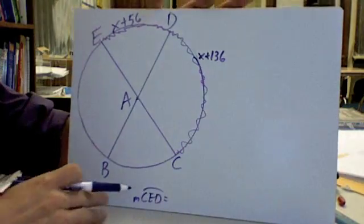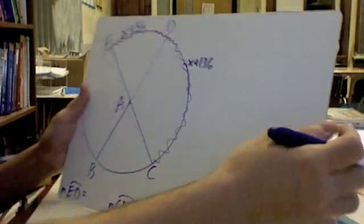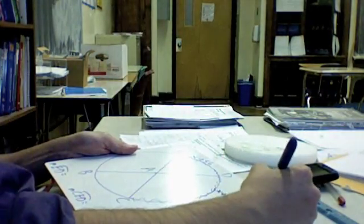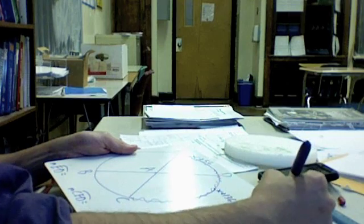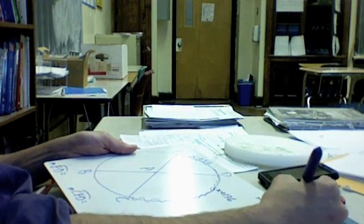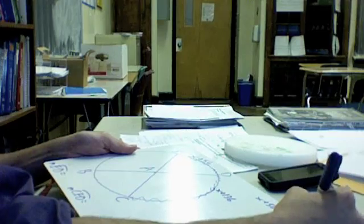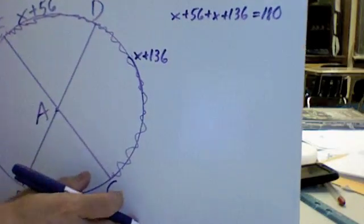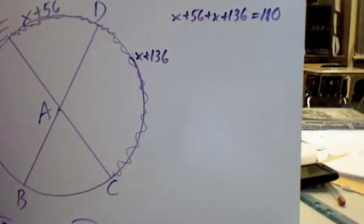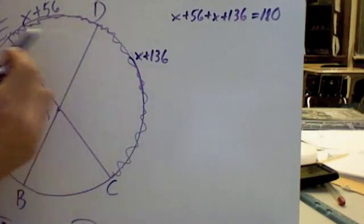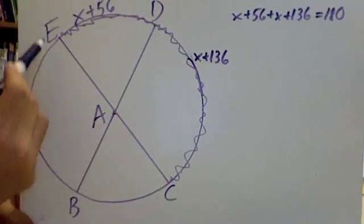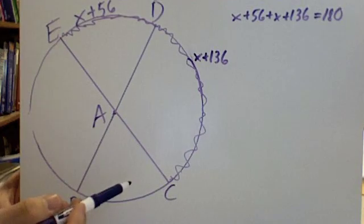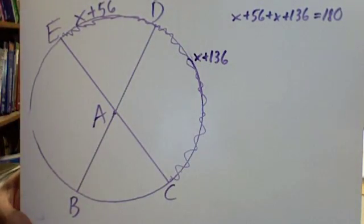So let's do that. Let's write X plus 56. I'm going to actually put the board down just for a second. X plus 56 plus X plus 136 equals 180. Just like that, just like we always do. All I did was I took these arc measures, I added them together, and they should equal 180 together because it's half of a circle.